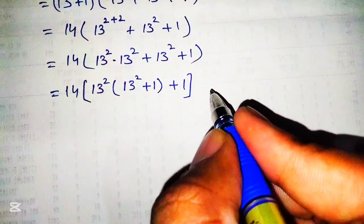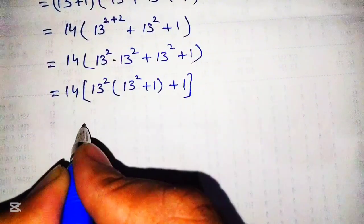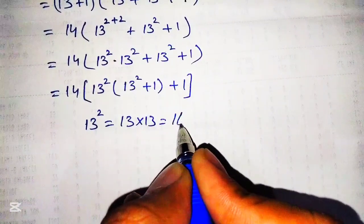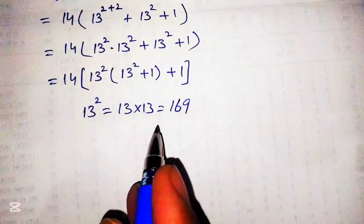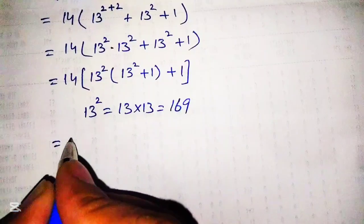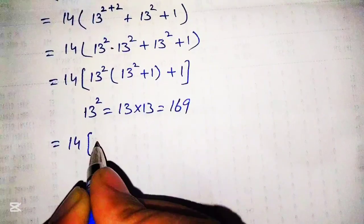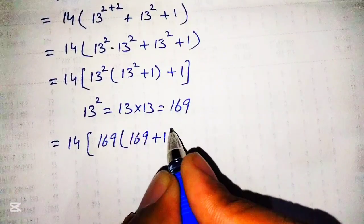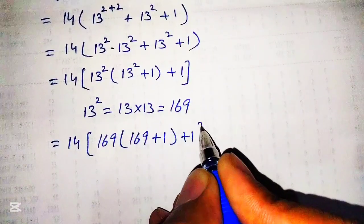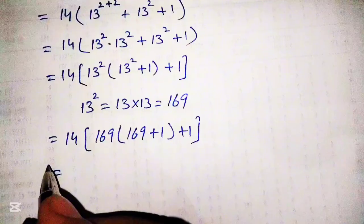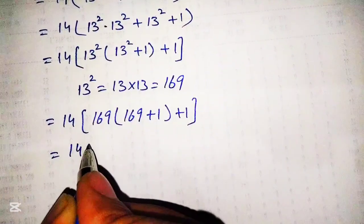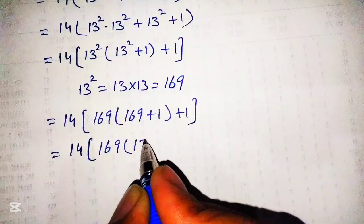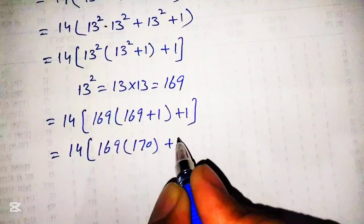Taking 13 raised to power 2 common, which equals 13 into 13 equals 169, and putting this value in, we get 14 into 169 into 169 plus 1 plus 1, which simplifies to 14 into 169 into 170 plus 1. This gives us 14 into 28,731.